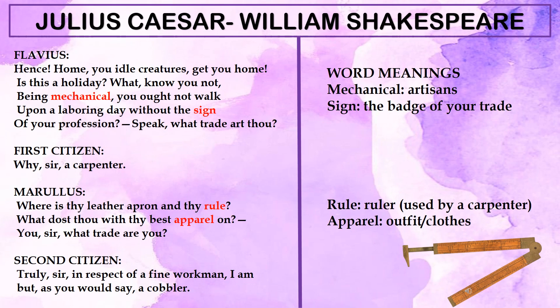The first scene begins with Flavius addressing people roaming freely in the streets of Rome. He tells them: 'You idle creatures, get you home!' He's saying today is not a declared holiday, so why are these people on the streets? Moreover, they are not wearing the badge or sign of their profession — in those days, people were supposed to wear a badge signifying what profession they belonged to.